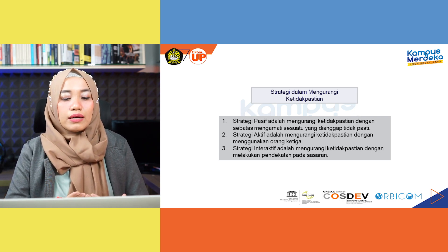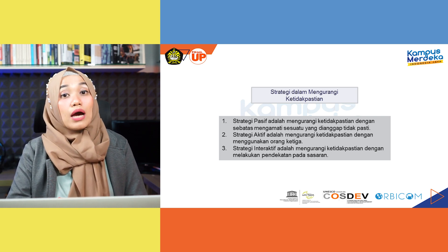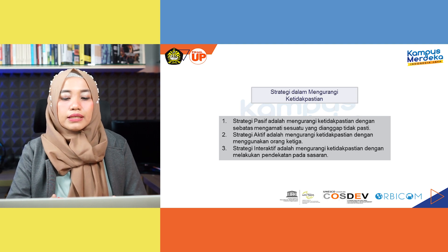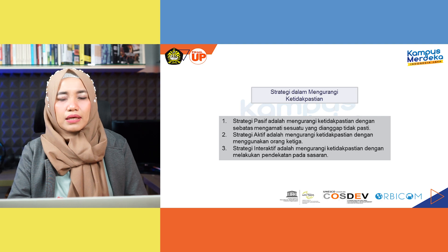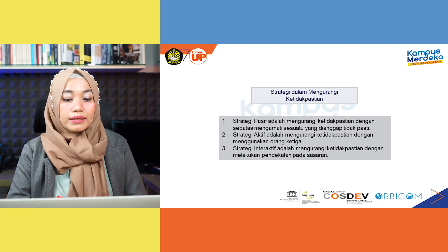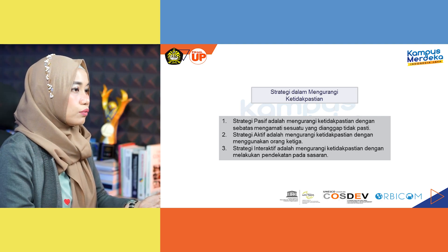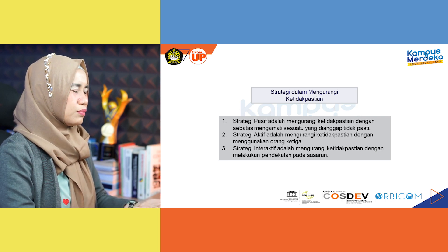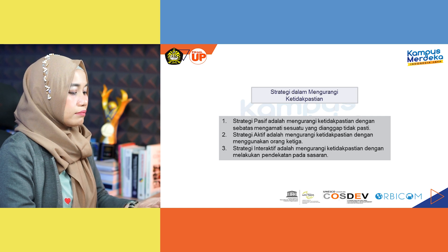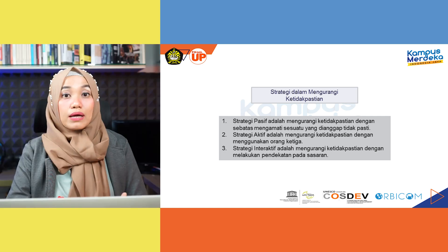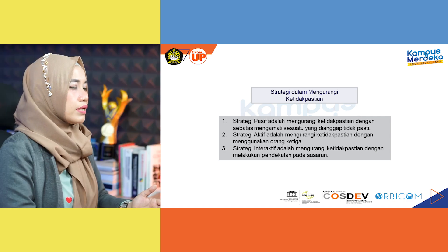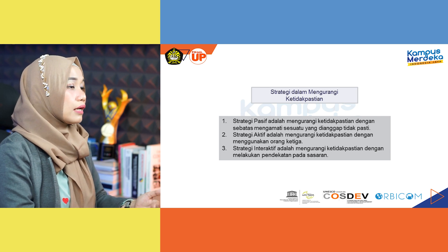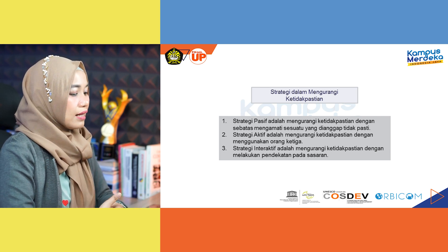Kemudian yang kedua adalah strategi aktif, yaitu mengurangi ketidakpastian dengan menggunakan orang ketiga. Ketika seseorang mengalami ketidakpastian untuk berkenalan misalnya dengan orang lain, maka dia akan menggunakan orang lain untuk mencari informasi tentang orang lain tersebut. Jadi ketika ada si A mau berkenalan dengan si B, maka dia akan mencari si C untuk bertanya tentang informasi terkait si B.